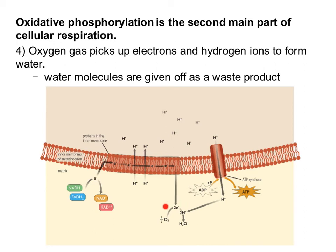Step four: as the electrons from our shuttles make their way through the electron transport chain and out the other side, they're going to get picked up by oxygen gas — O2. This is the reason that we breathe in oxygen: so this process can happen. Oxygen is a highly electronegative element, meaning it's literally acting like an electron magnet, pulling these electrons through the electron transport chain. This is the final electron acceptor, and it accepts the electrons along with some hydrogen ions to become water — which is why water is a byproduct of cellular respiration.